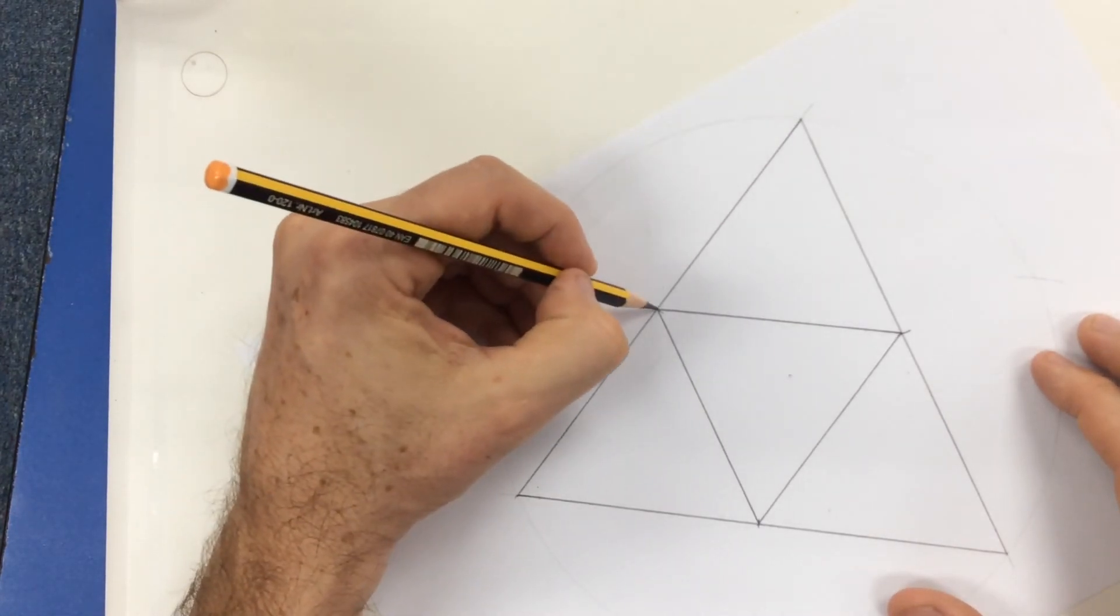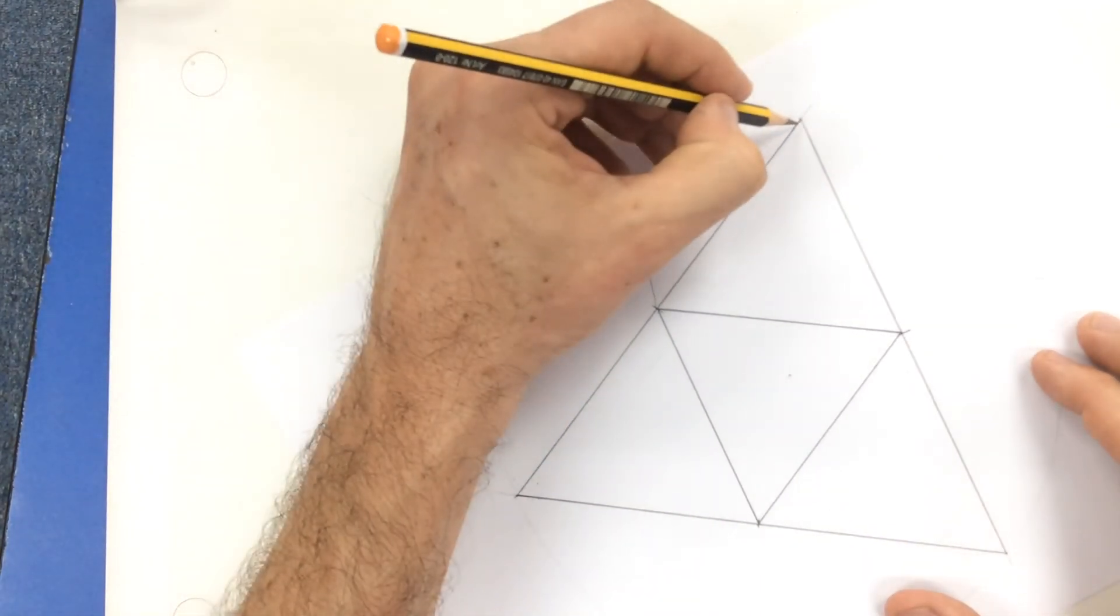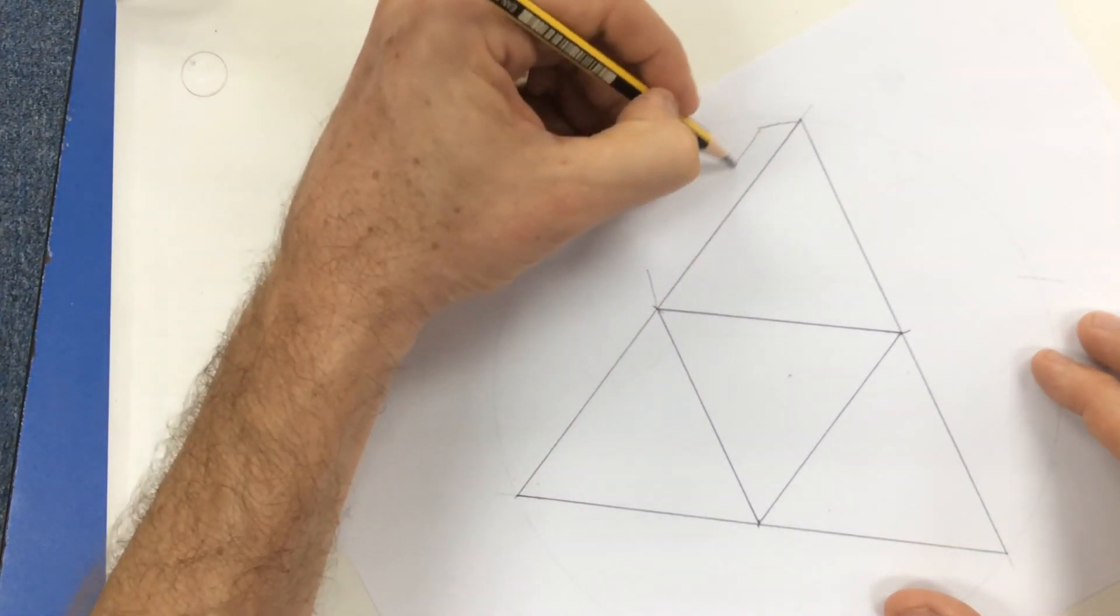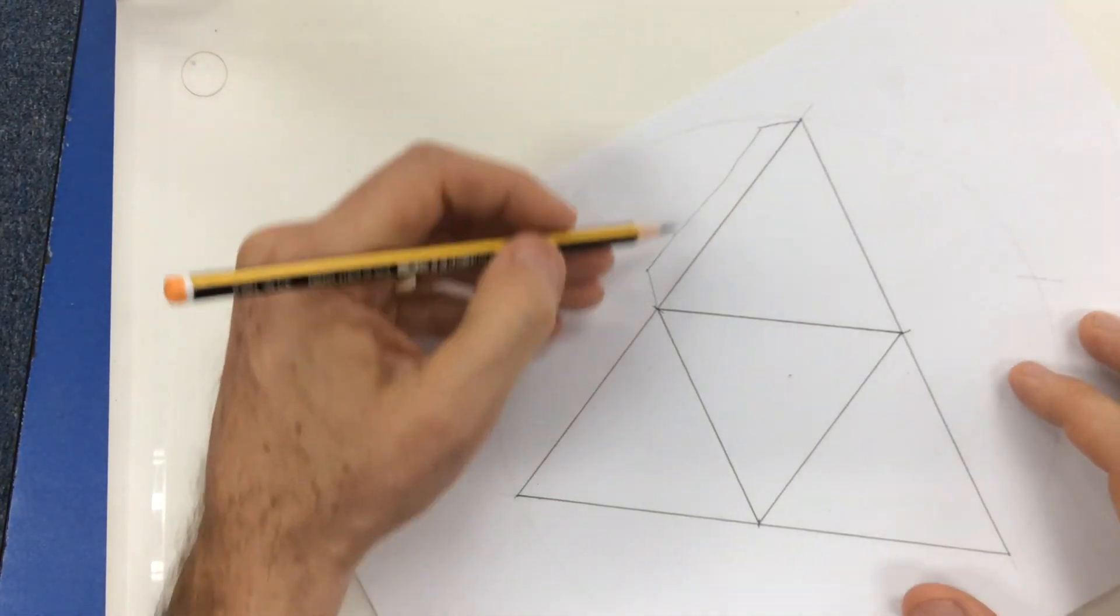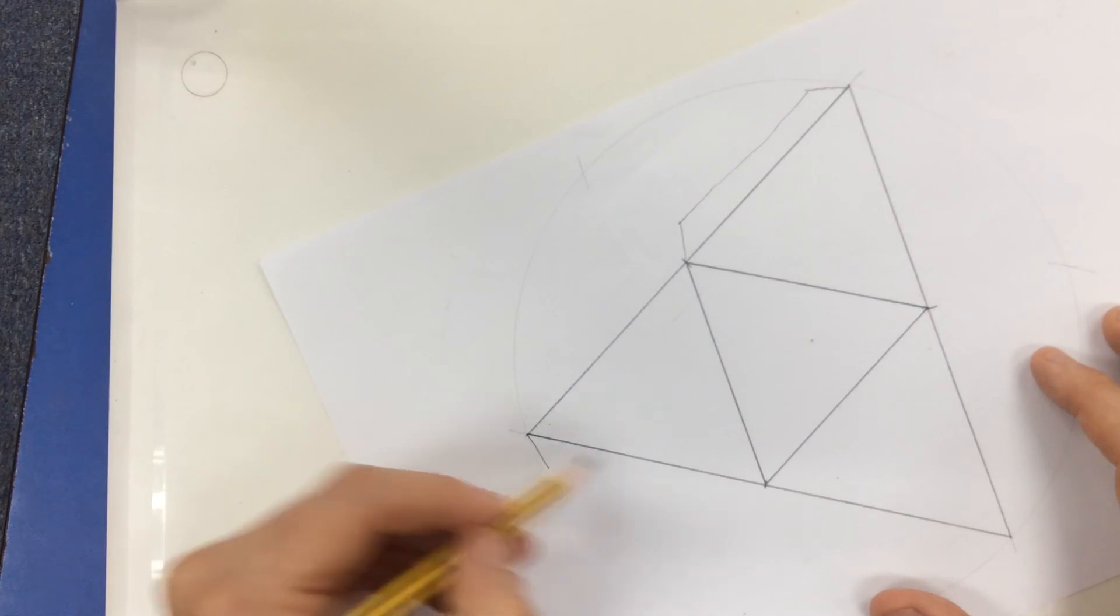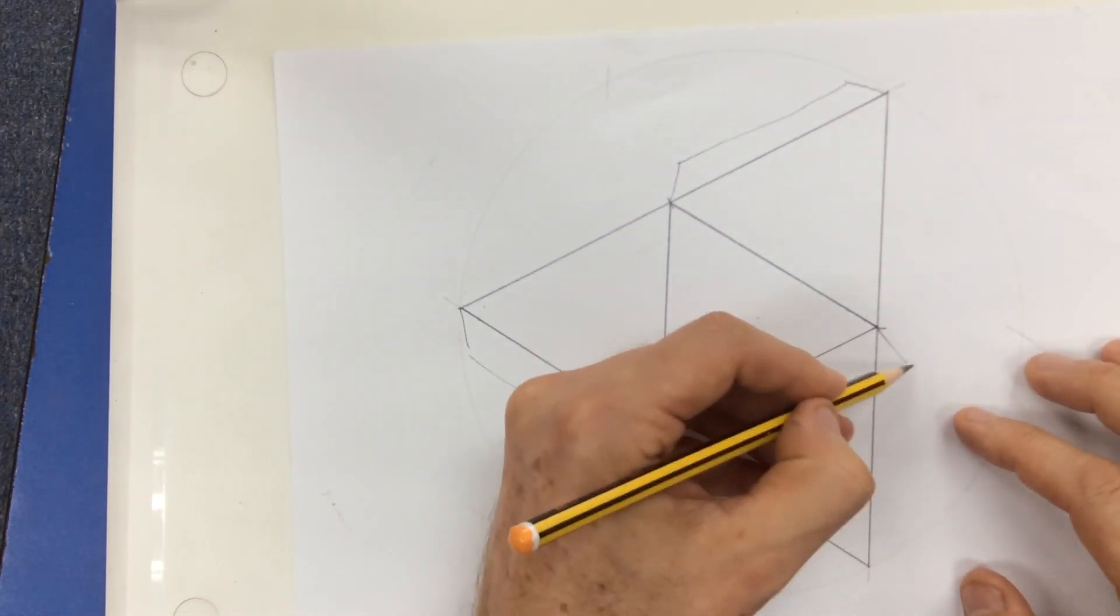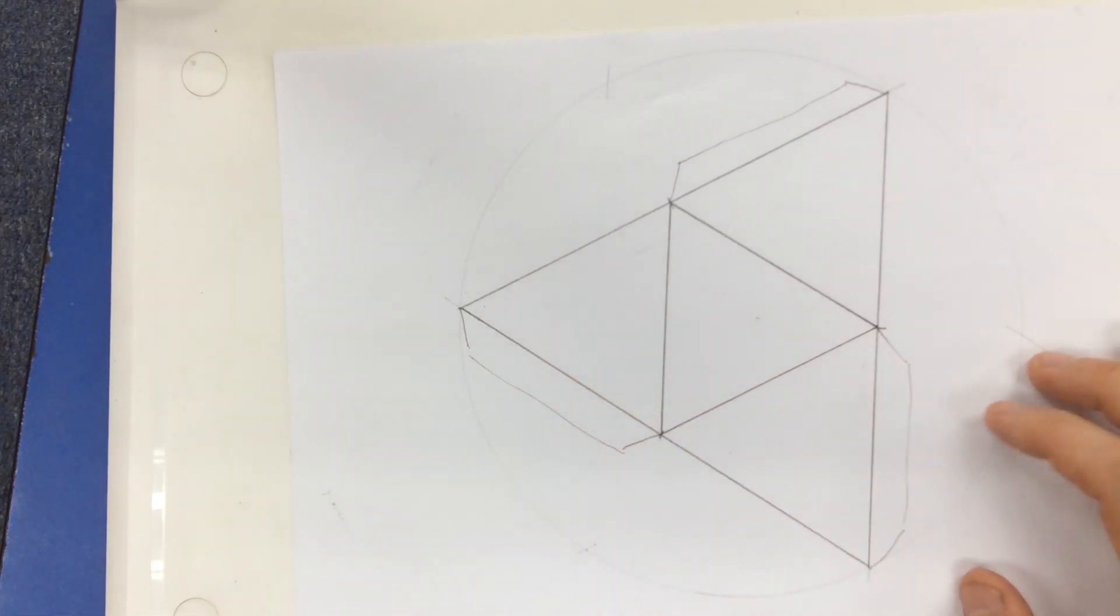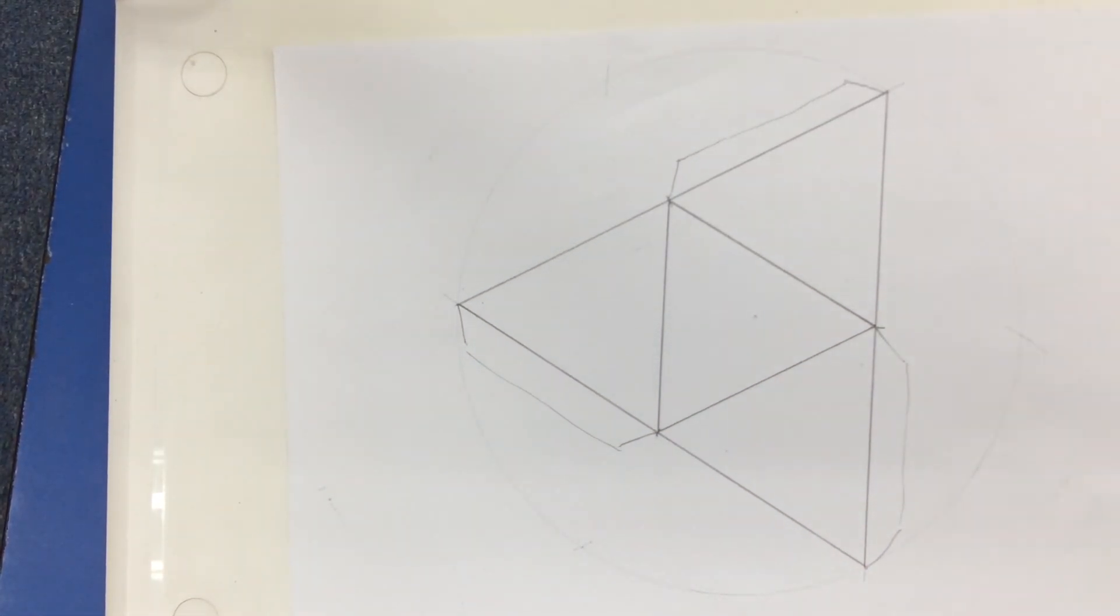All I need to do now if I wanted to make this into a 3D shape is put some flaps on. You can just draw those on. And the way I would do this is do one, skip one. Do one, skip one. Do one, skip one. And that's how to make a net for a tetrahedron.